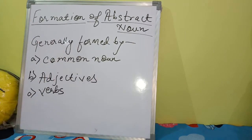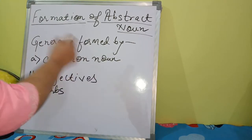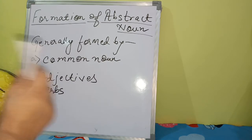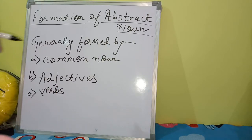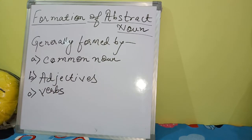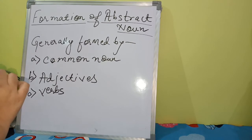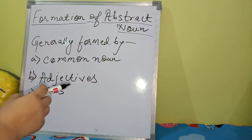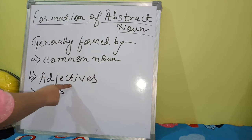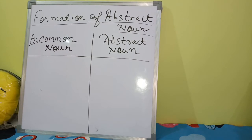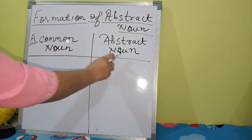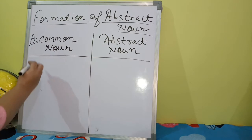For common nouns and adjectives, if you want to know what a noun is, you can check our previous video on types of noun — I will link it for you. Now we will see how abstract nouns are formed from common nouns. For example: